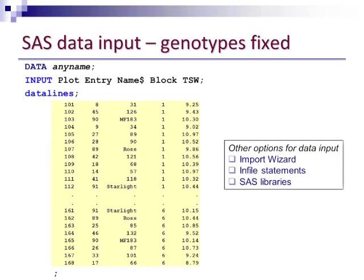Let's start out by considering our genotypes to be fixed. This is showing the format you could use for data entry — the simplest way, where you put the data directly into your program. In SAS, you assign a data name to the dataset, then use an input statement to indicate the order of your entries. Notice the dollar sign with the name variable, because that is a character variable. Then you simply list your data lines.